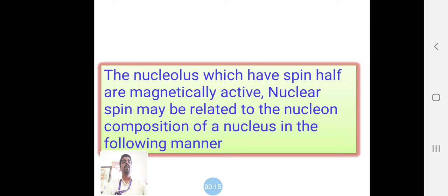Nuclear magnetic resonance is based on the nucleus which has spin and is magnetically active. The nuclear spin may be related to the nucleon composition of a nucleus. Here, the nucleus is the main area - the base of the nucleus, that means atomic number.